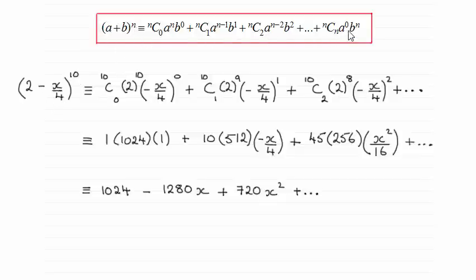We can only use this formula by the way if we've got a positive integer which we have, 10. So notice I've said that it's identical to rather than equals to because we're just dealing with an identity here. And also I've put plus and so on on the end even though we're just cutting it off to the first three terms.